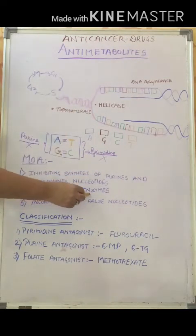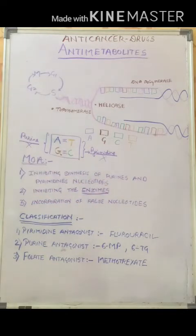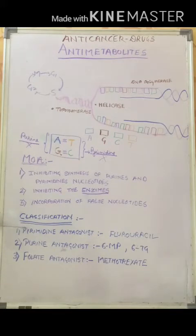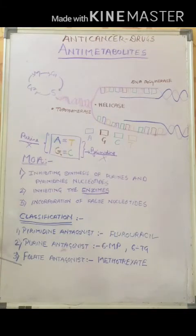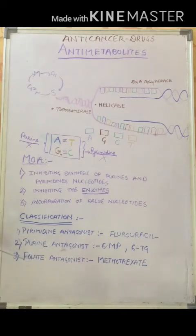Anti-metabolites also inhibit key enzymes and are further classified as: pyrimidine antagonists, which inhibit the synthesis of pyrimidine nucleotides; purine antagonists, which inhibit the synthesis of purine nucleotides; and folate antagonists, which inhibit the dihydrofolate reductase enzyme — an important enzyme during the de novo synthesis of purines and pyrimidines. We will now see these drugs one by one.